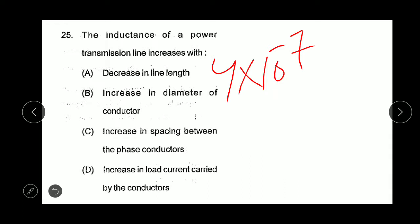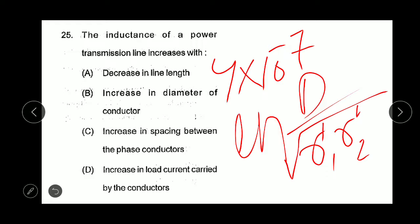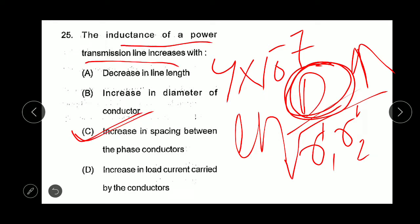From the previous question, this is 2 times 10 to the power minus 7. Then ln D by square root of R1 dash R2 dash. Here D is the spacing between conductors. R1 is the effective radius of first conductor and this is the second conductor. If we increase D, the spacing between the phase conductors, then inductance will increase. Hence option C is the correct answer.